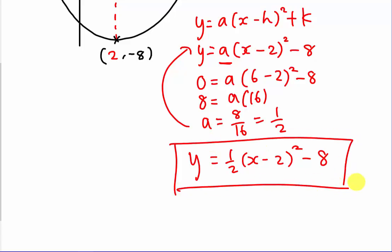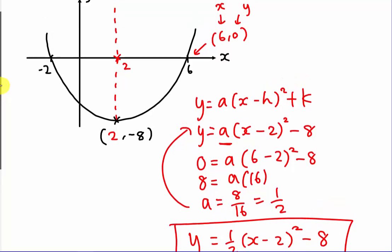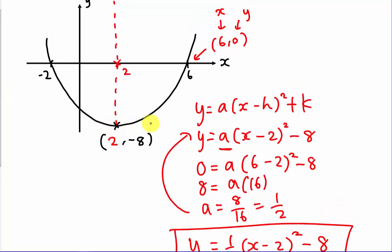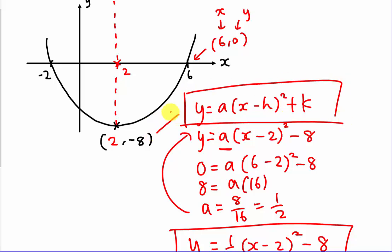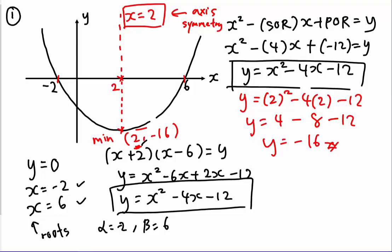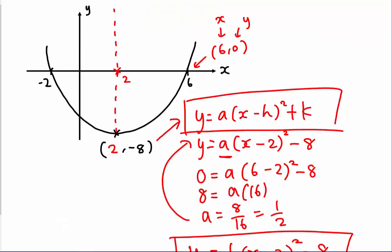Therefore the equation of the curve is y = ½(x − 2)² − 8. Even if you expand it, you'll find a ≠ 1. When the minimum or maximum coordinate is given, always use this formula. You cannot assume the coefficient of x² equals 1 if any coordinate of the minimum or maximum point is given.